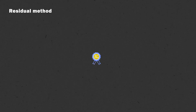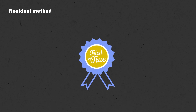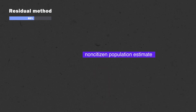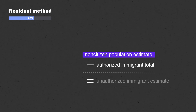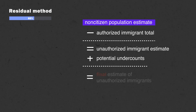The first is a residual method, which is a tried-and-true approach we've used for many years to make our U.S. estimates. In the case of Europe, it helped us calculate about 60% of our total unauthorized immigrant population. Using government data, we developed an estimate of the total non-citizen population within each country, then subtracted the authorized immigrant total to arrive at our estimate of the country's unauthorized immigrant population. We also made adjustments for potential undercounts, since unauthorized immigrants aren't always fully represented in country data.